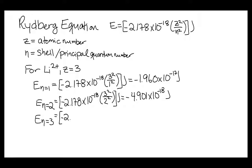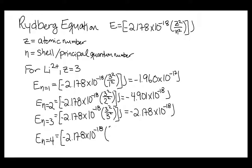For n equals 3, we get negative 2.178 times 10 to the negative 18 joules. And for n equals 4, we get a value of negative 1.225 times 10 to the negative 18 joules.